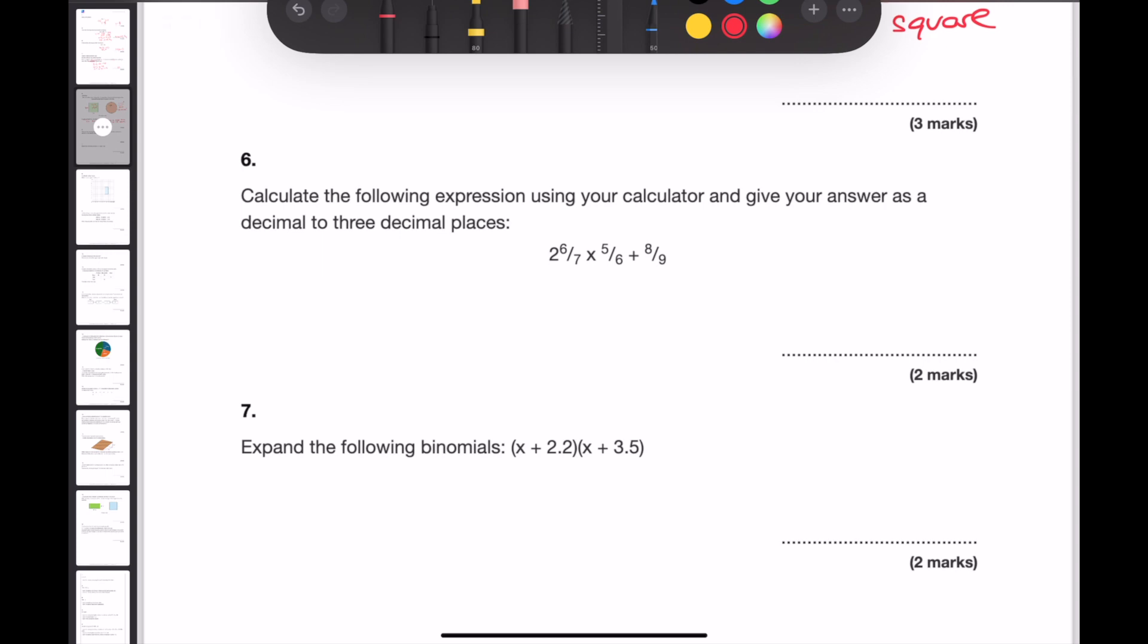Question 6. Calculate the following expression using your calculator and give your answer as a decimal to three decimal places. When you enter this into your calculator, remember that the mixed number needs to be entered using the mixed number button. And doing the multiplication before you do the addition, 2 and 6 sevenths multiplied by 5.6 gives 50 over 21. Now adding on 8 ninths gives 206 over 63. Clicking on the decimal button and rounding to three decimal places gives me 3.270.